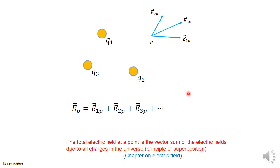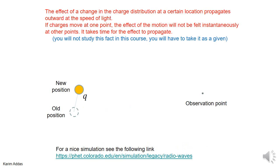We also know from before the principle of superposition: if you have many charges in space and you want to get the total electric field at a point, you get the electric field due to each charge as if the other charges don't exist, and then you add them.